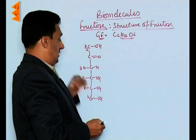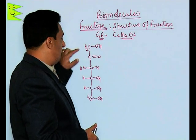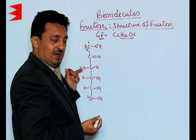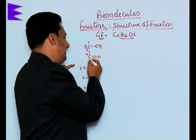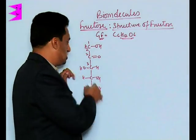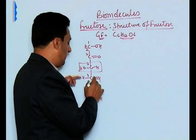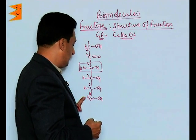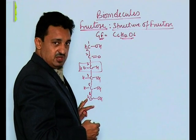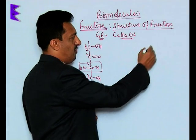This is the spatial straight chain structure of the fructose molecule. The first carbon has an OH group — it is polyhydroxy, having 5 OH groups. The second carbon contains the ketonic group. The third carbon, like glucose, has an OH group on the left hand side. The fourth, fifth, and sixth carbons each have one OH group on the right hand side.